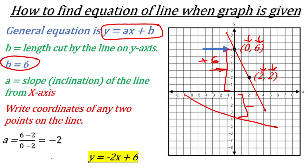So the value of b is easy to find, but for the value of a you need to remember this formula and read the coordinates from the graph. Practice some other questions and I am sure you will understand this topic. If you have any problems, write in the comments and I will try to make it clear. Thank you for watching the video.